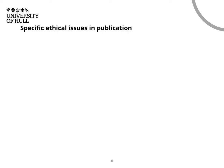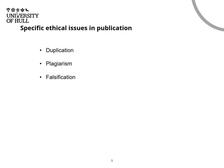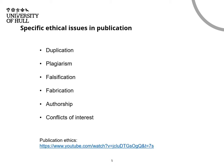So, some specific ethical issues in publication — and I think this covers all of the potential issues. There are six of them: the first is duplication, the next is plagiarism, next is falsification and fabrication, authorship issues, and finally conflicts of interest. I'm not going to go into these in detail here. If you want to know more about these, you can check out my YouTube presentation on Publication Ethics at the link below.